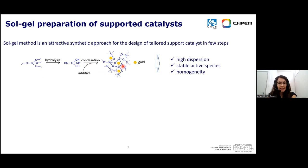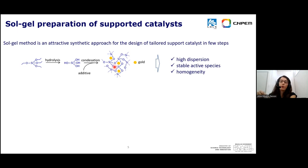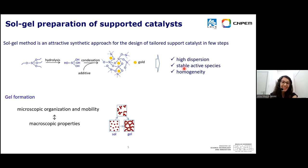To prepare supported catalysts using this method, we can include the metallic precursors during the gel synthesis, so the metallic species will be well-distributed in the gel structure. This allows a higher dispersion than impregnation of a metal after formation of the porous material, and also produces more stable active species that are homogeneously dispersed. The macroscopic properties of these materials strongly depend on the microscopic organization and mobility, so it is very important to understand the dynamics during these transitions.